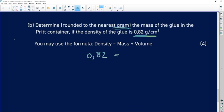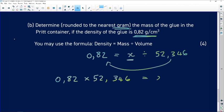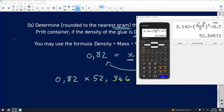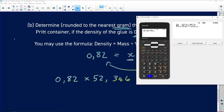And then because we are looking for the mass, I'm going to make the mass x. And then because we've already calculated the volume in the previous question, which was 52.346, we are then going to solve for x. And if we are solving for x, when this comes to the side, we need to multiply with it. So it's going to be 0.82 times 52.346. So that's how we're going to find our answer. 0.82 times 52.346.